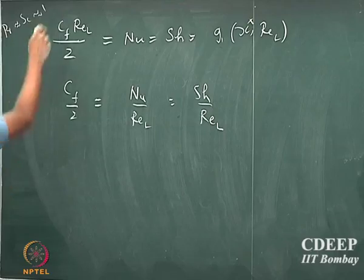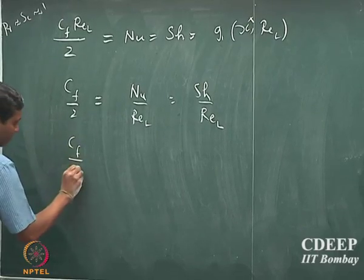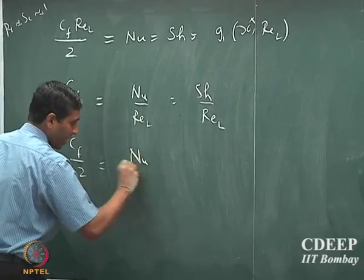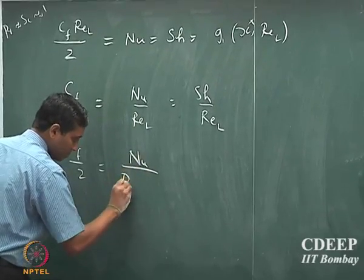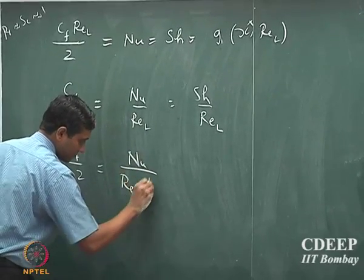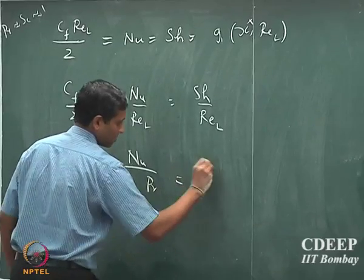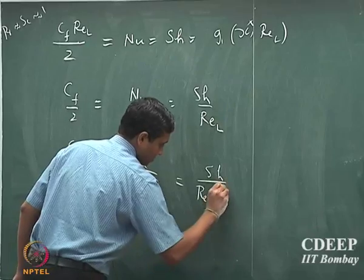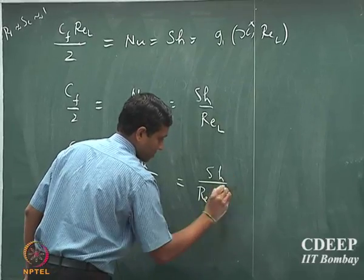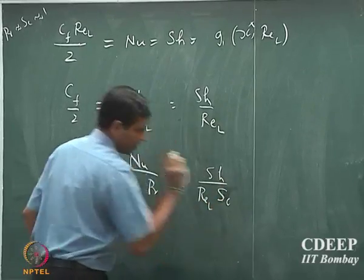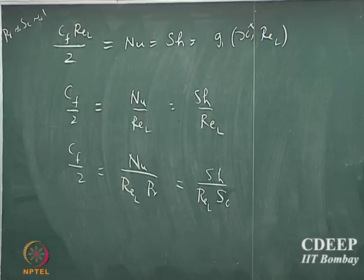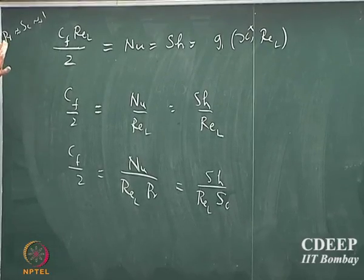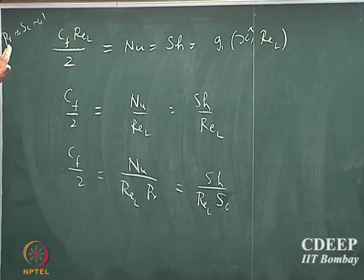And because we assume Prandtl and Schmidt to be 1, we could also rewrite this as Nu divided by 2 times Schmidt number. This is simply because we assume Prandtl and Schmidt are almost equal to 1.